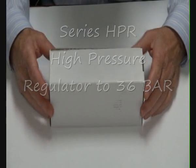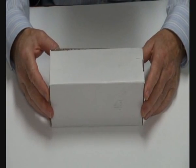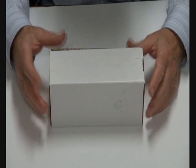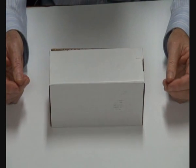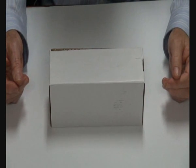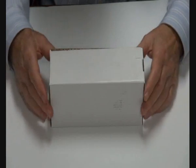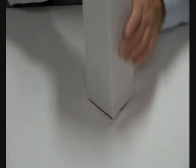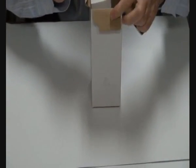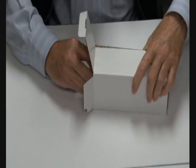This is a Series H PR pressure regulator, quarter BSP to 1 inch BSP, with a range of 5 to 36 bar. It's a high pressure regulator that comes in a box complete with a gauge.